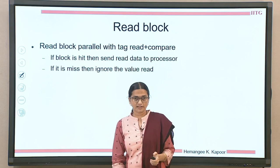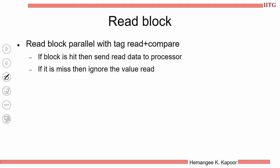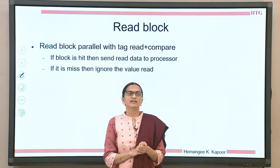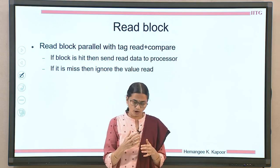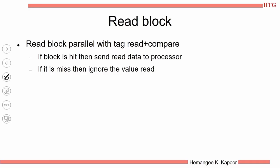So how do we make reads fast? In a set associative cache, you imagine the four ways and you parallelly compare the tags. While you are comparing the tags, can we start the read? Not possible in a set associative cache. But in a direct map cache, it is possible to start reading the block. In a direct map cache we can do a parallel tag compare as well as block read together. If it is a hit, then you send the block. If it is a miss, then you simply ignore the read. This is how you make reads fast.